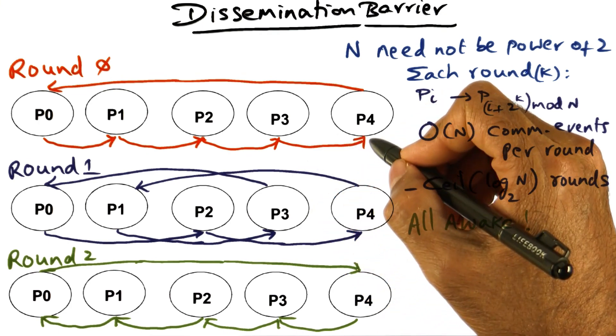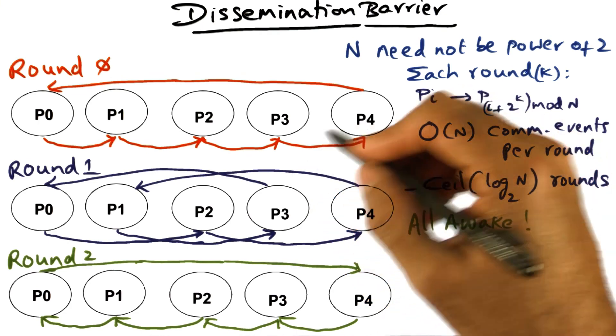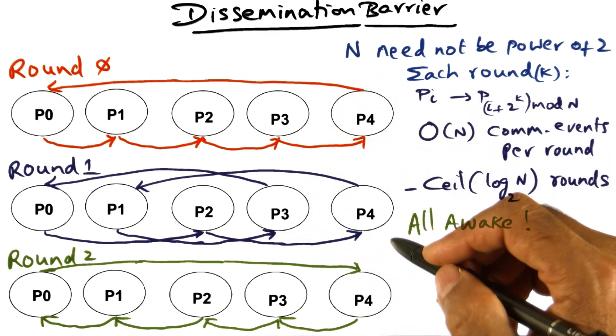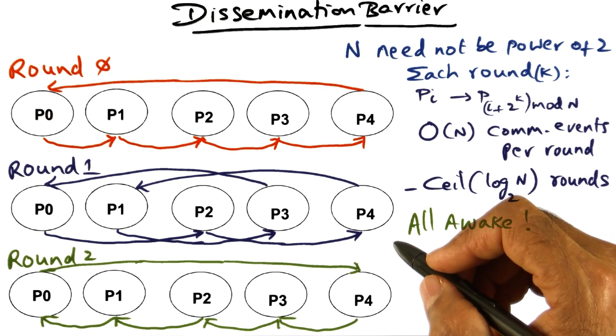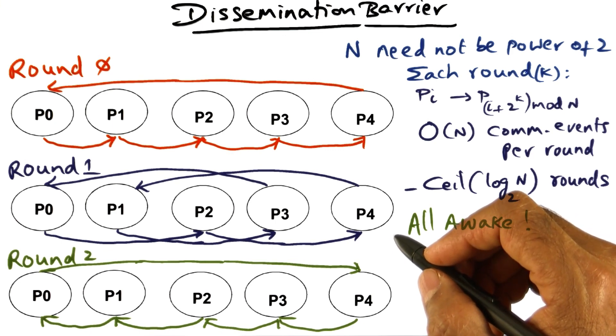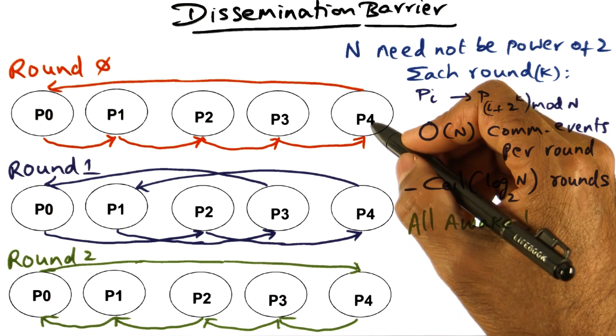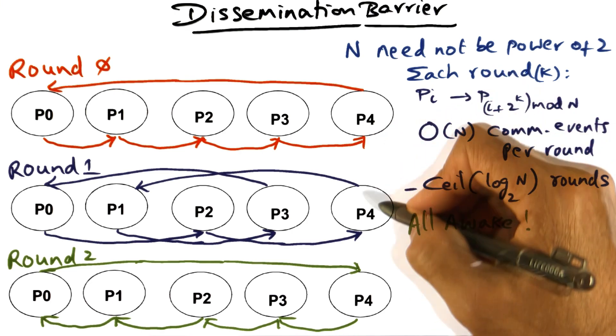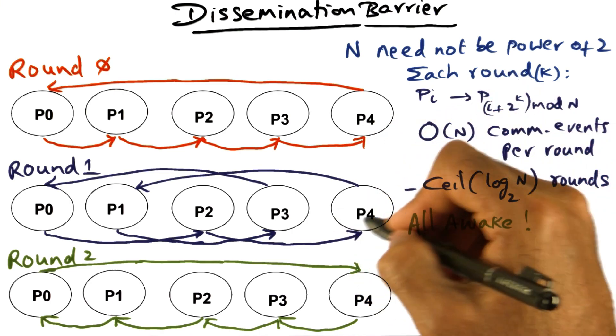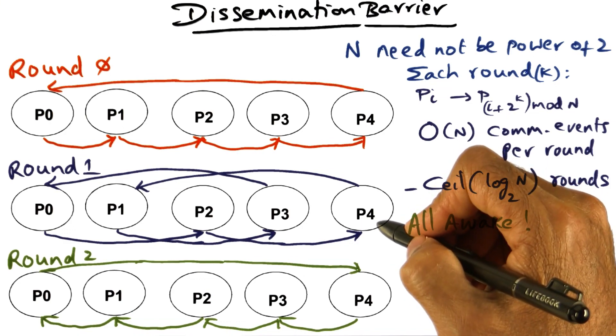Again, static determination of spin location becomes extremely important if the multiprocessor happens to be an NCC NUMA machine. In that case, what you want to do is locate the spin location in the memory that is closest to the particular processor. So that becomes more efficient.